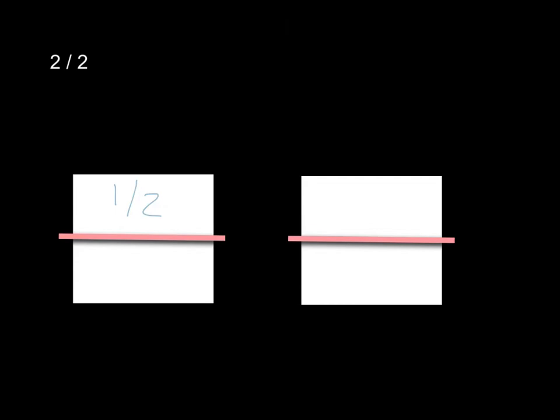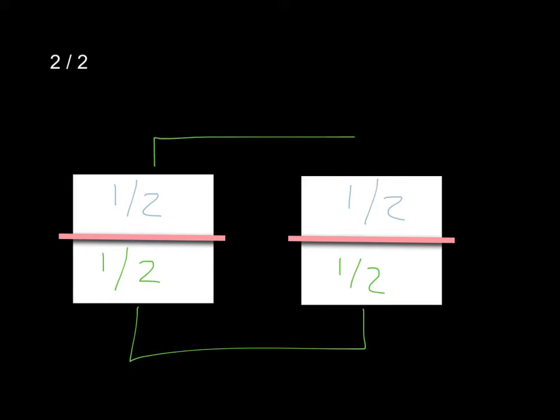So to have two halves, it would look like two wholes — the white rectangles — divided in half. What I really have here is half of the first rectangle and half of the second rectangle, and then I still have half of the first and half of the second. So I have two halves here and two halves up top. When we combine those two halves, one half plus one half equals one whole, which is the same as two divided by two, or two halves.